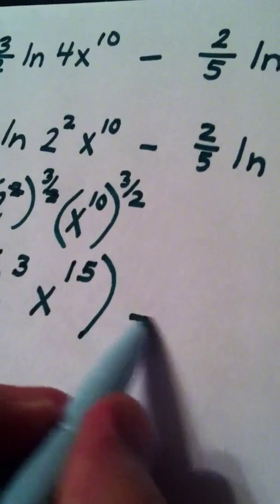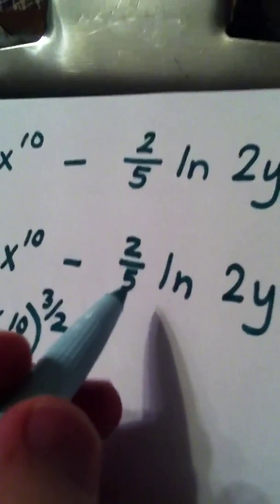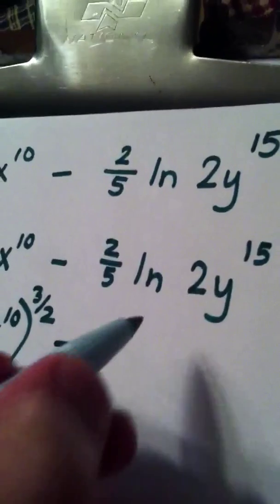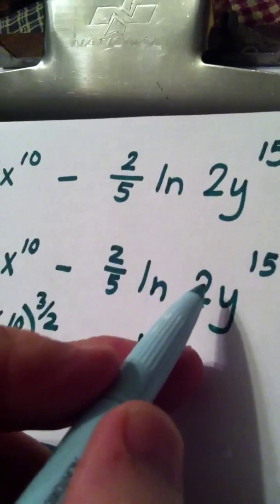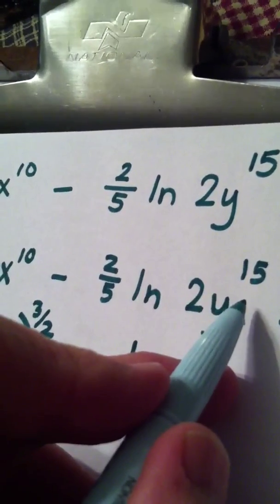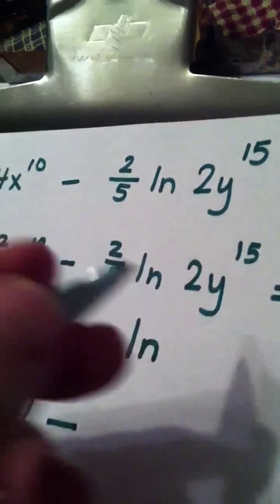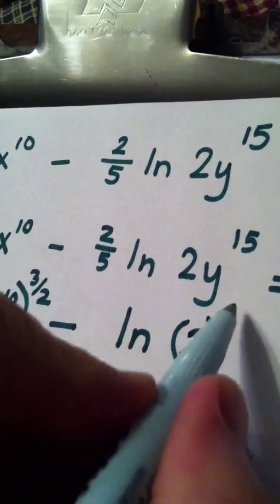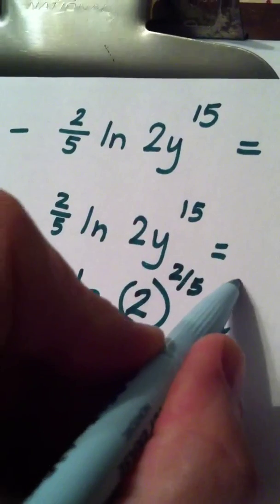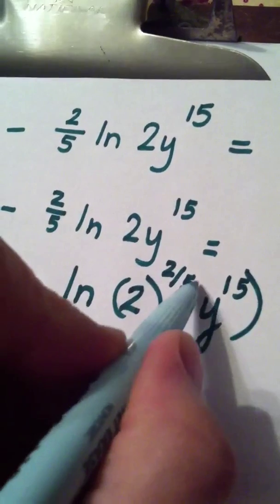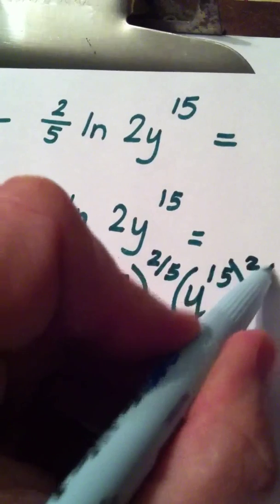I have a minus in the middle. Follow me. This minus is here. This natural log, this 2 fifths, just in the previous example, doesn't just go to the 2, it also goes back on the y to the 15th. So I have 2 to the 2 fifths and I have y to the 15th raised to the 2 fifths.